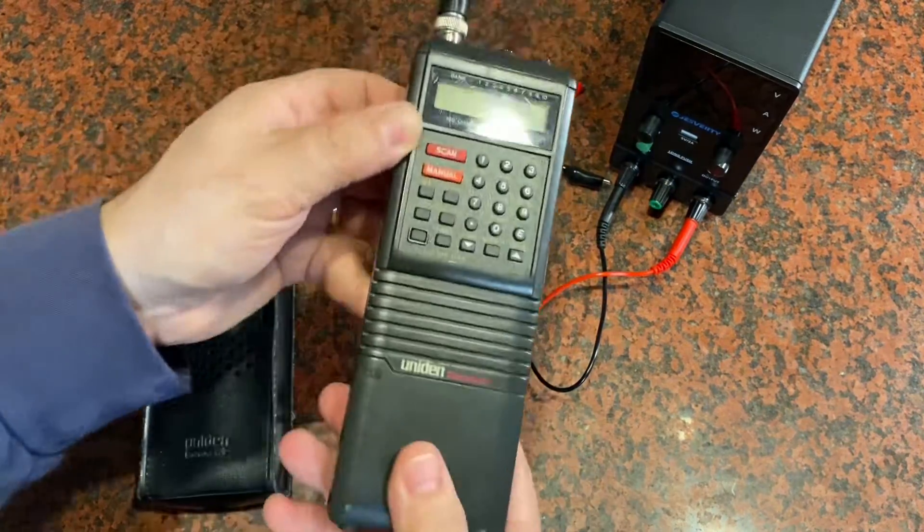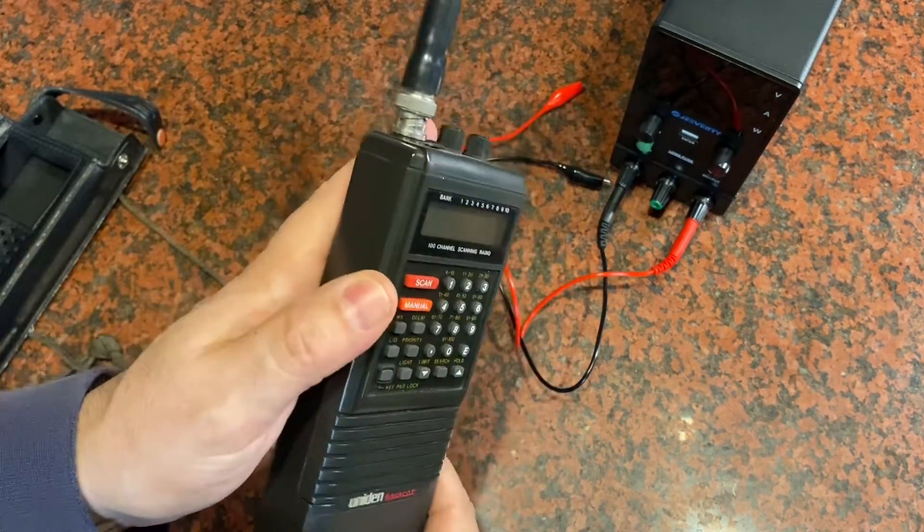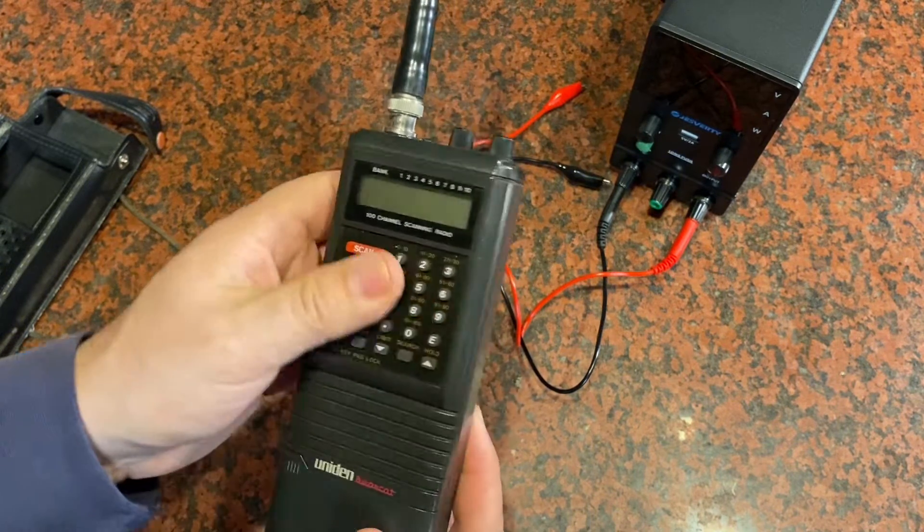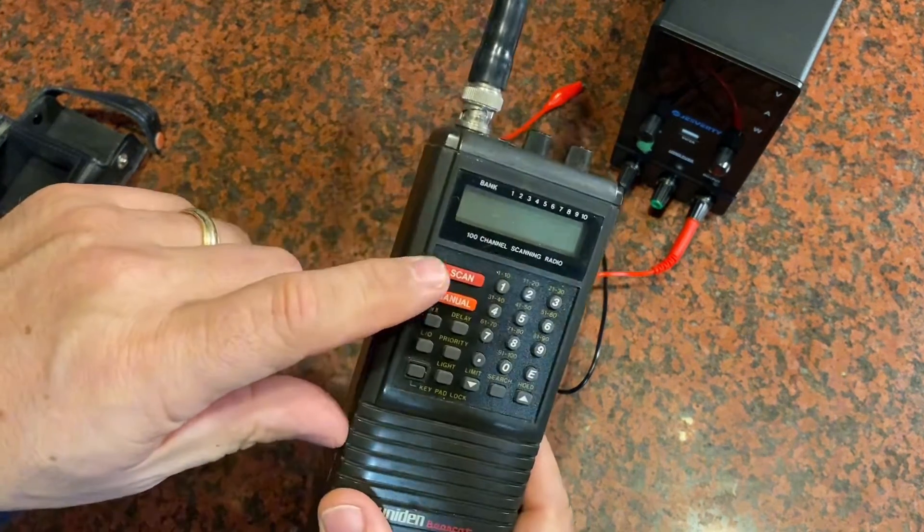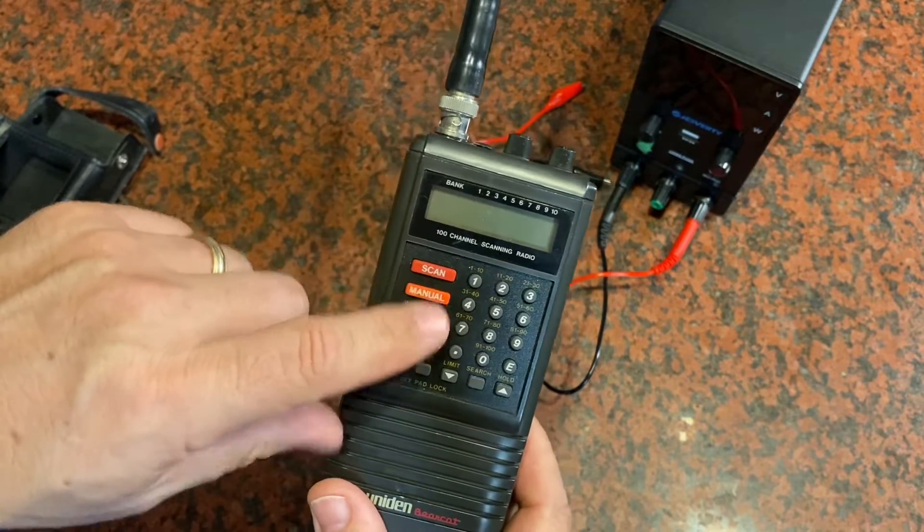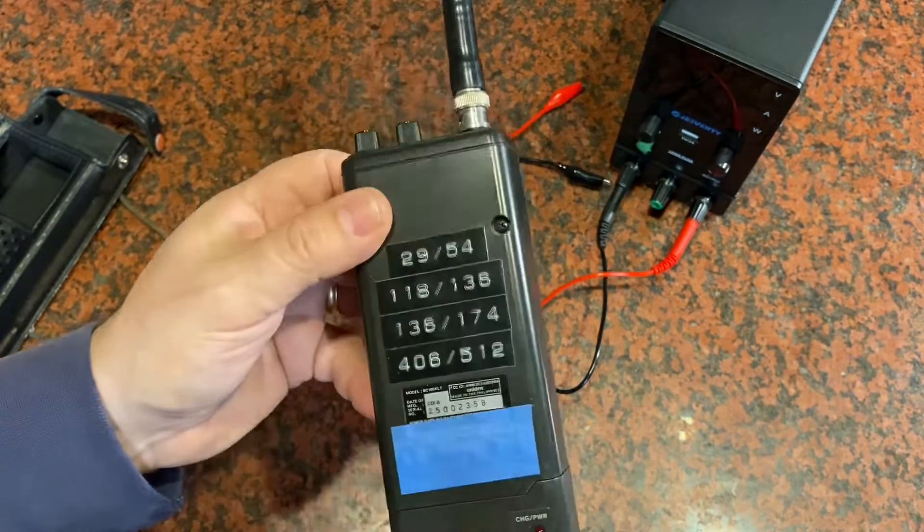It has a nicad battery on it. These Bearcats were useful for scanning police frequencies and listening to all kinds of things on the radio airwaves. It would just run through the different frequencies as you scan through different banks of numbers you would have programmed into it.